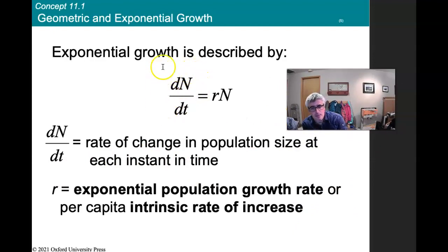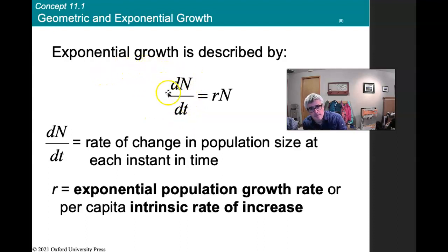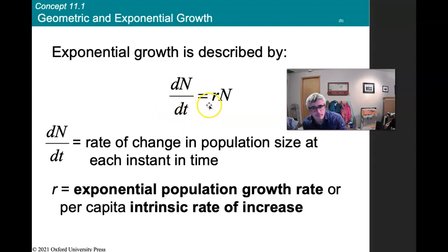Exponential growth is described as the change in population divided by the change in time — the rate of change in population size at each instant. If we wanted a daily exponential growth rate, we'd ask: how much did it change in a day, how many more are there today compared to yesterday, with change in time equal to one day. That equals r, the exponential population growth rate per capita, or the intrinsic rate of growth.